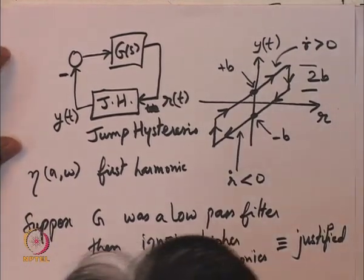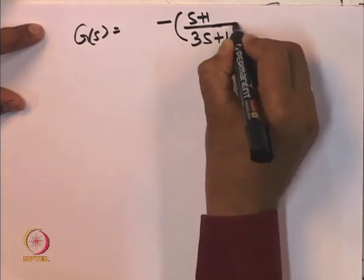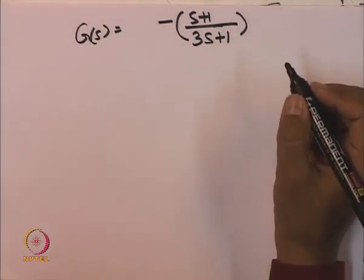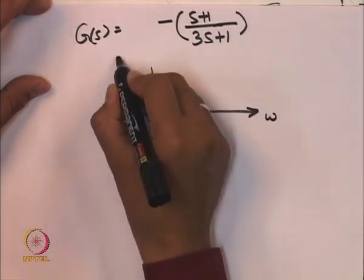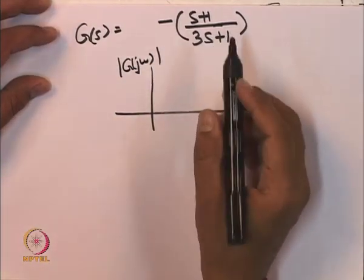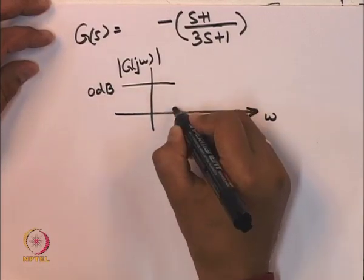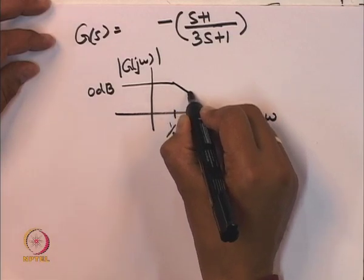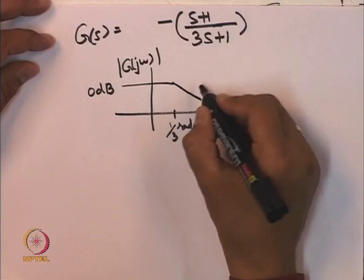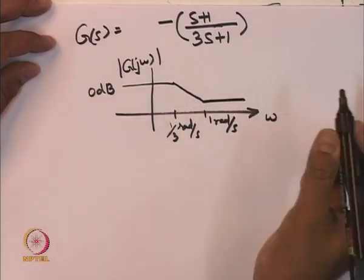Ignoring higher harmonics is justified if G is a low pass filter. Now we will take an example. Let G(s) = -(s+1)/(3s+1). Is this a low pass filter? For S equal to 0, the DC gain is 1, 0 dB. Then the first thing we encounter is a pole at 1/3 radians per second, so the magnitude starts decreasing at the rate of 20 dB per decade. This is an asymptotic plot until we encounter a zero at 1 radian per second, after which it flattens. So this is indeed some low pass filter.